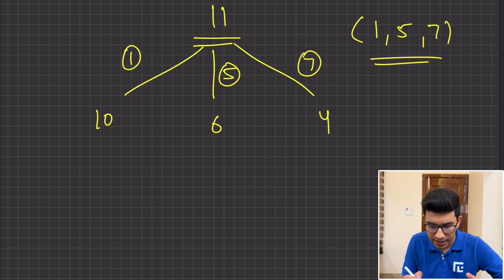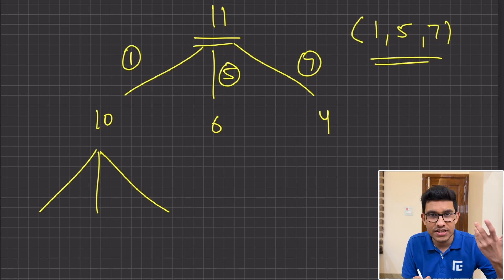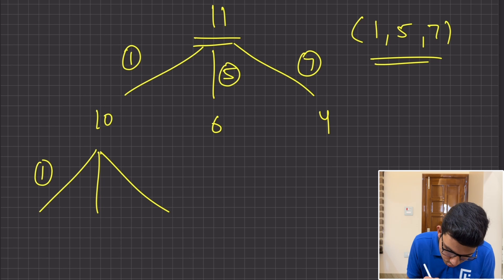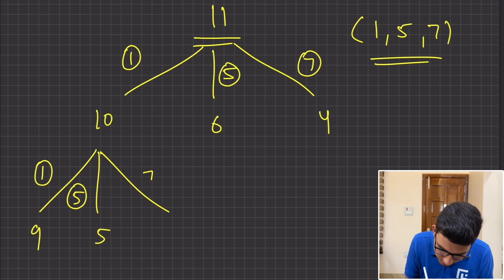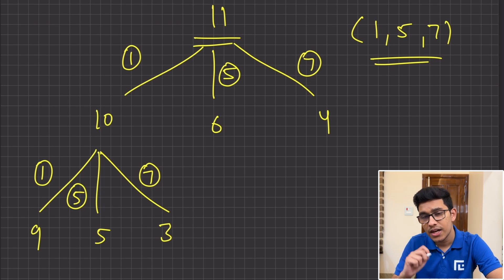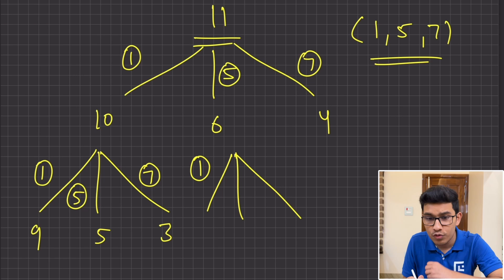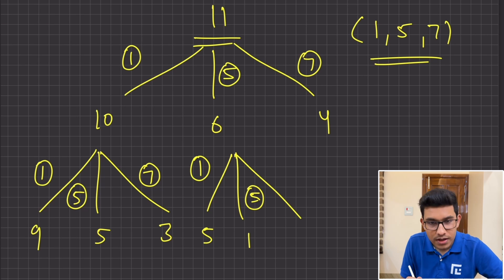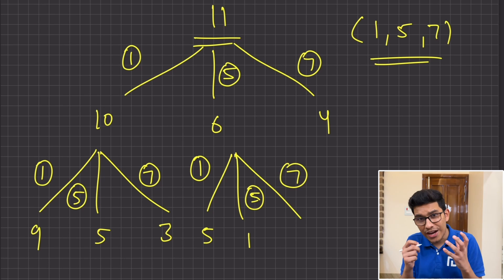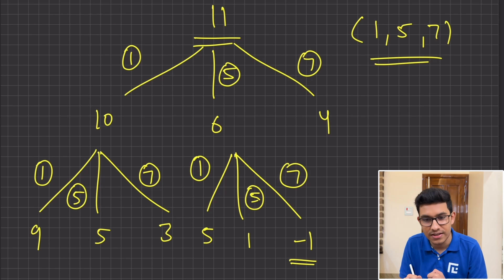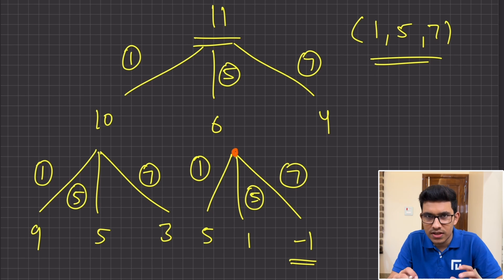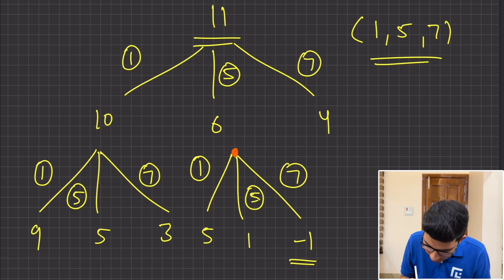Similarly, look at 10 — to construct 10, if you use coin 1 you need 9, coin 5 gives 5, coin 7 gives 3. For 6: using coin 1 gives 5, using coin 5 gives 1, but using coin 7 would require constructing sum minus 1, which is not allowed. This clearly shows that if we want to construct sum X, we cannot use a coin whose value is higher than X.